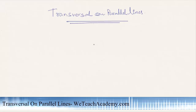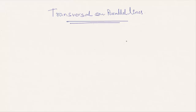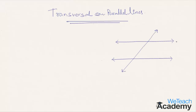Hey guys, welcome to vteachacademy.com. In this presentation we are going to discuss transversal on parallel lines. Here in this diagram, L is parallel to M and P is a transversal intersecting lines L and M at two distinct points, thus forming eight angles.